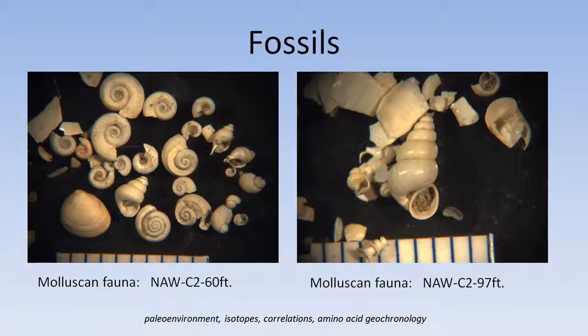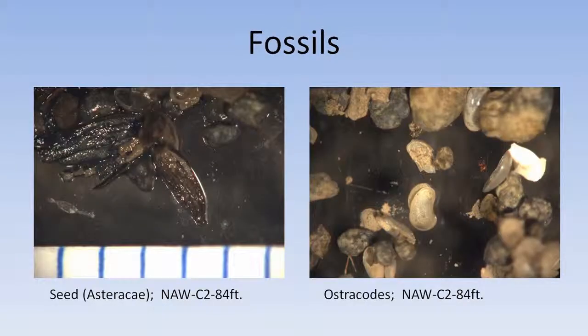A few other fossils we find include gastropods and mollusks. They're mostly small, maybe a few millimeters or less, but they do help us understand the environment and the correlations of the material. Seeds are occasionally found — occasionally we'll find something like an aster seed. Brandon Curry helps me look at the ostracods, and he's talking later this afternoon about that. They live in lakes.